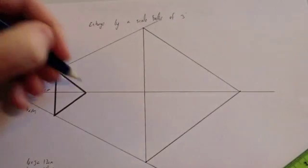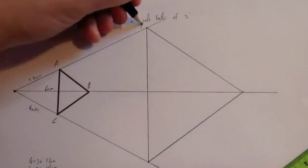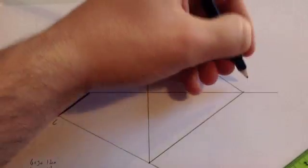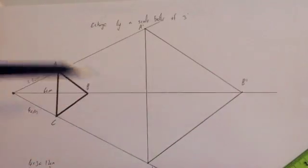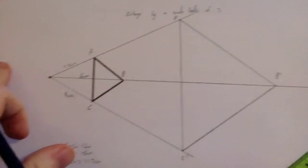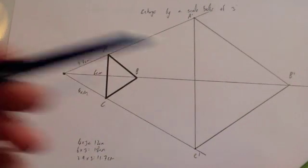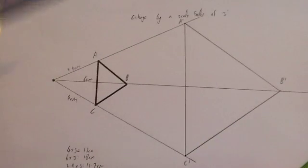There we've got our new object, our new image. If this was A, B, C, this would be A dash, B dash, C dash. This is our new triangle. It's 3 times larger. You could measure the sides. And it's also 3 times further from the center of enlargement. This is the Ray method.